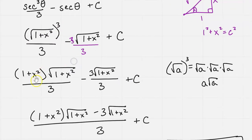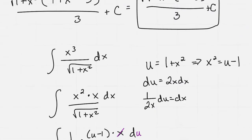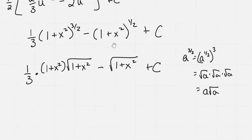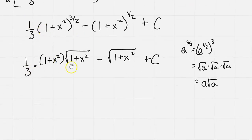it came down to 1 plus x squared out in front times the square root of 1 plus x squared over 3, which is the same as multiplying by 1 third. The second term was square root of 1 plus x squared. This line of the square root of 1 plus x squared all cubed over 3 minus the square root of 1 plus x squared plus c,